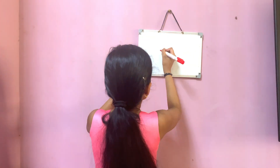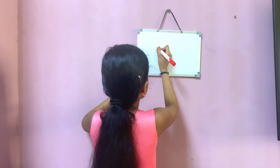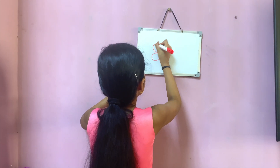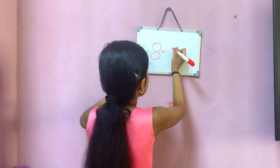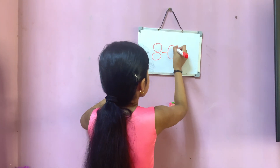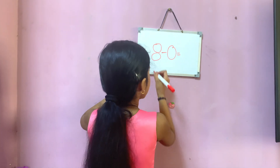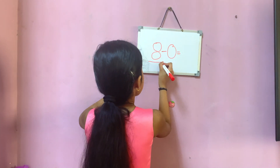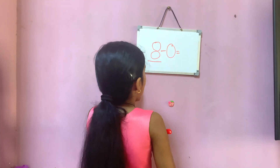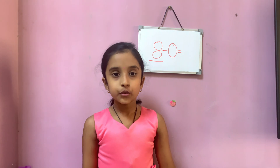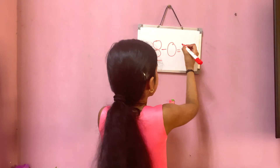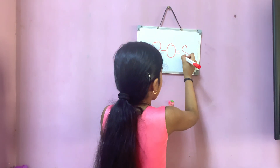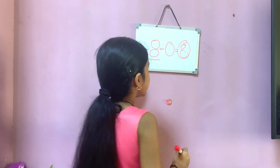Let's see another one. Here I am writing eight minus zero. Here eight is the big number and zero has no value, so you simply write eight. So eight is the answer.